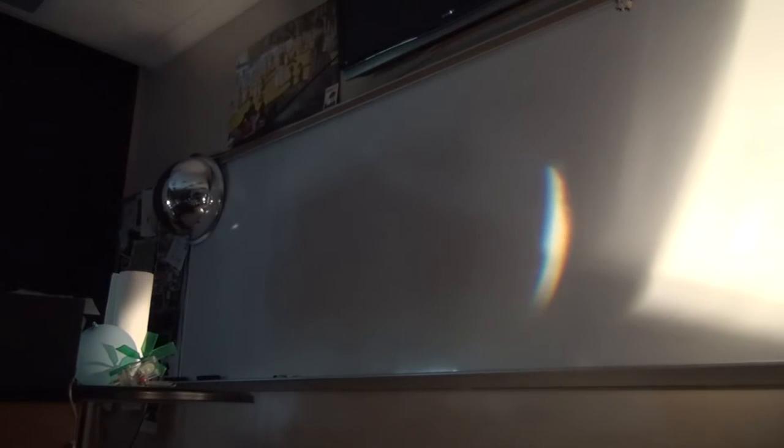As a result, the prism separates white light into its constituent red, green, and blue, which we see as this rainbow on the board.